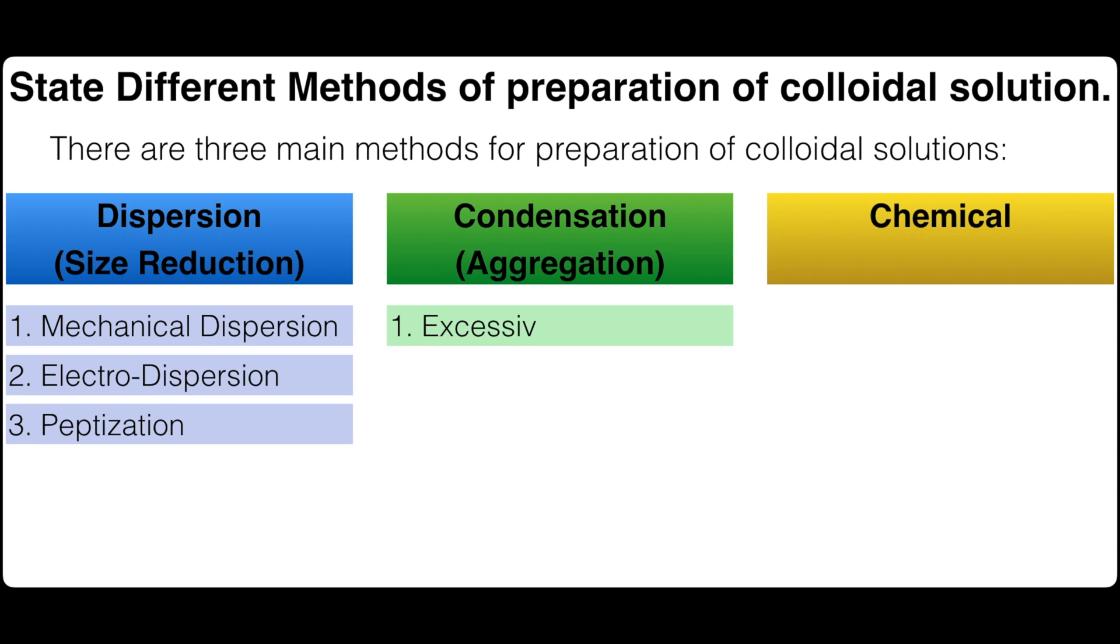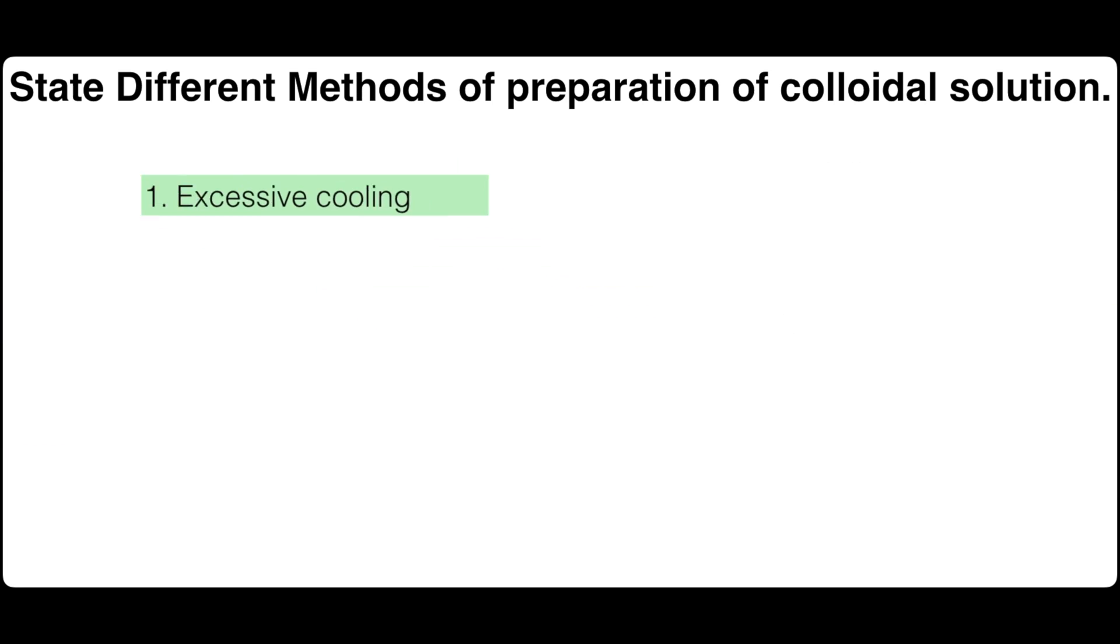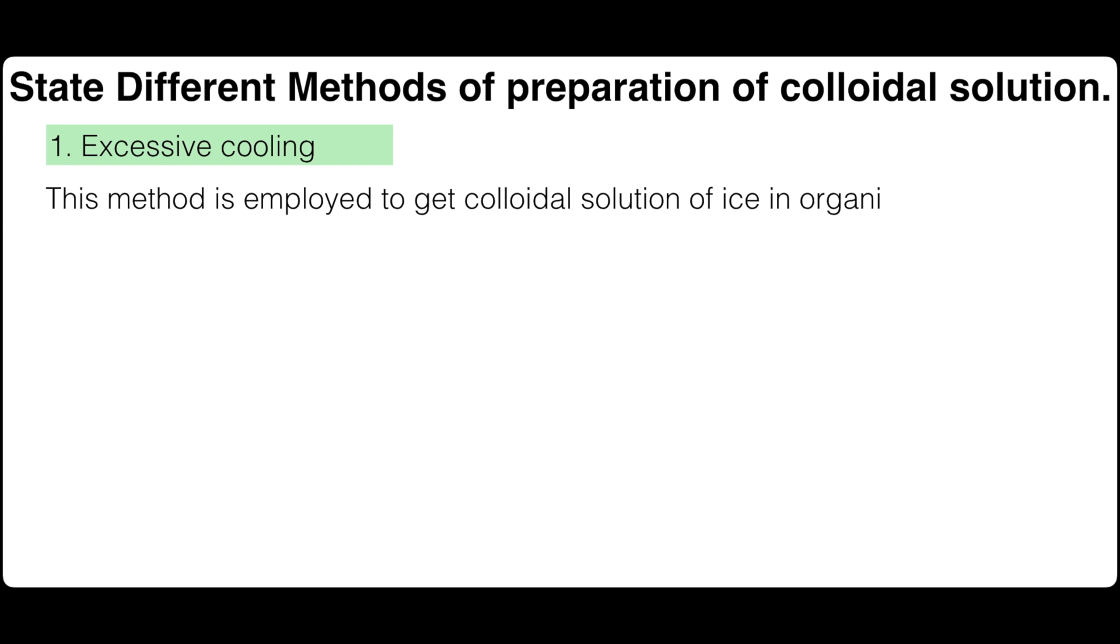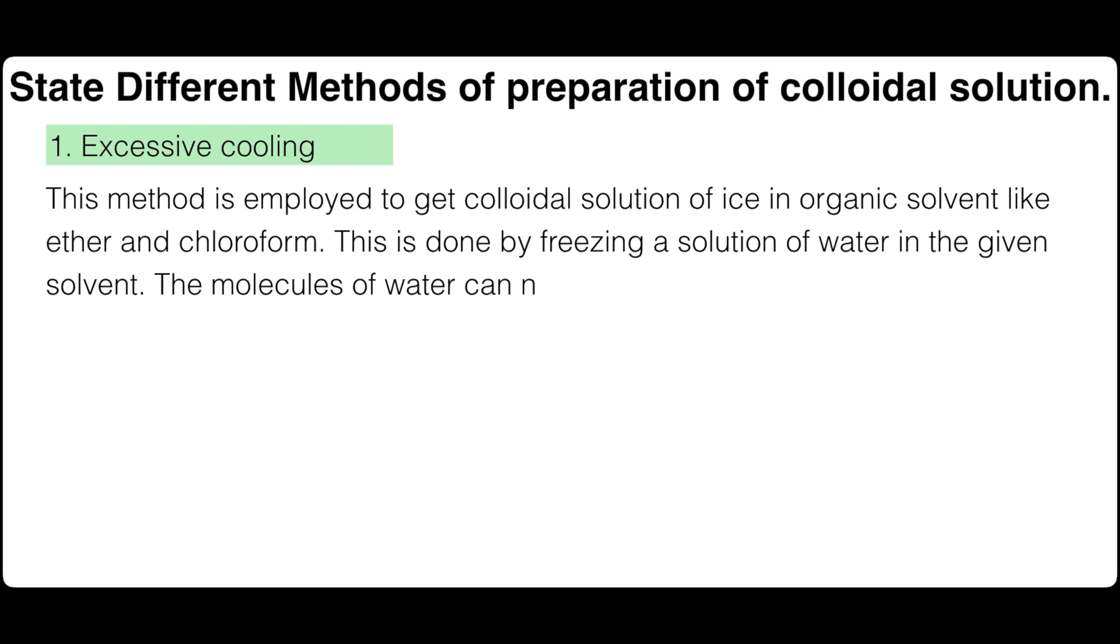Now let's talk about the condensation or aggregation methods. There are two possibilities, one is excessive cooling. The method is employed to get colloidal solutions of ice in organic solvent like ether or chloroform. This is done by freezing a solution of water in the given solvent. The molecules of water can no longer be held in solution. They collapse together to yield colloidal sized particles.